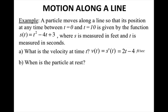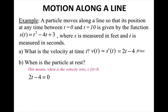When is the particle at rest? That should tell you that the velocity is going to be 0 — that's when a particle is not moving. So we set the derivative equal to 0 and solve for t. At 2 seconds, the particle is not moving.